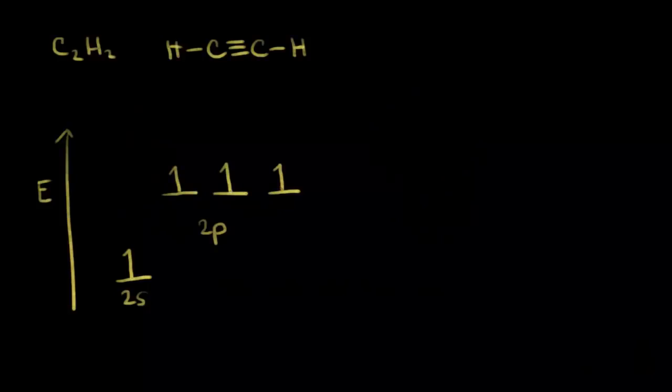In the video on sp3 hybridization, we saw carbon was bonded to four atoms. In the video on sp2 hybridization, we saw that carbon was bonded to three atoms. And in this video, we're going to look at the type of hybridization that's present when carbon is bonded to two atoms. Looking at this carbon in ethyne, or the acetylene molecule, this carbon is bonded to a hydrogen and also bonded to another carbon — so carbon bonded to only two atoms.